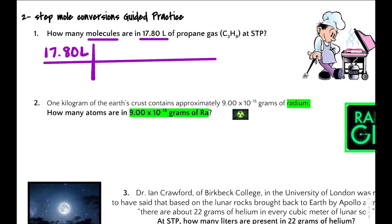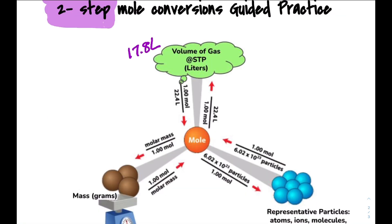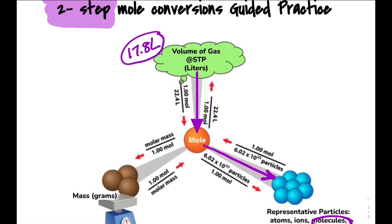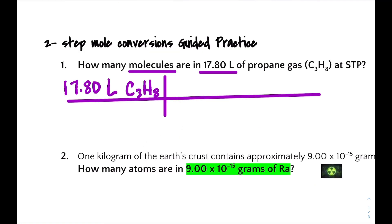Take a look at the mole map to see our path. Our given value is 17.80 liters. Our first step will be to convert liters to moles. Since the question is asking us to determine the number of molecules present in that many liters, our second step will be to convert moles to molecules — step one, step two. Let's insert our units to convert to moles.